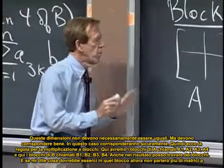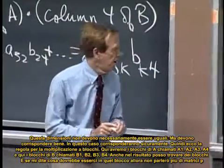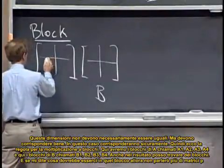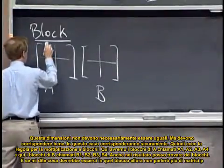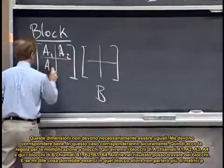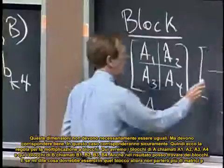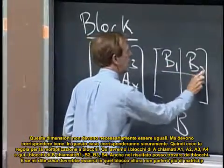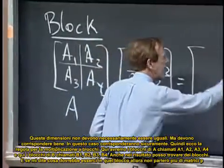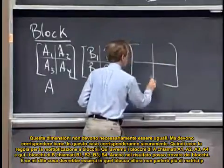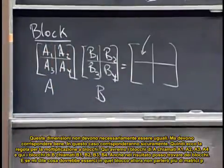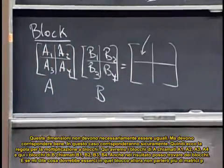So these sizes don't have to be the same. What they have to do is match properly. Here they certainly will match. So here's the rule for block multiplication. That if this has blocks like A, so maybe A1, A2, A3, A4 are the blocks here, and these blocks are B1, B2, B3, and B4, then the answer, I can find block. I can find that block. And if you tell me what's in that block, then I'm going to be quiet about matrix multiplication for the rest.